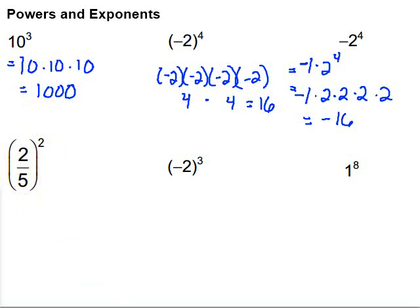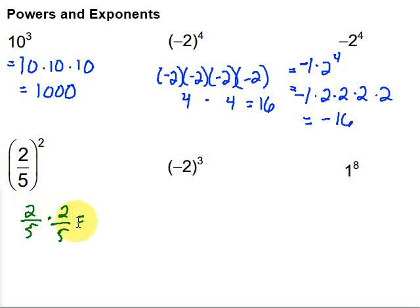This works the same way with fractions. We've got the fraction two-fifths being squared, so that means we have two-fifths times another two-fifths. When we multiply fractions, we go straight across: two times two on top is four, and five times five on the bottom is twenty-five. Can't simplify, so the answer is four twenty-fifths.